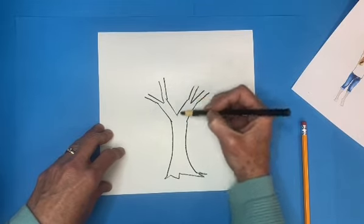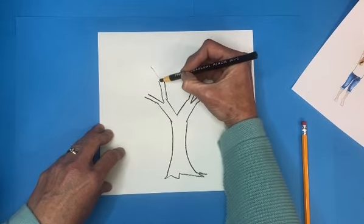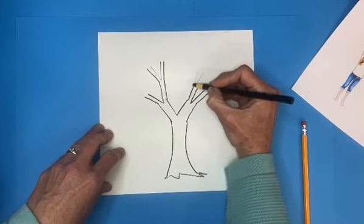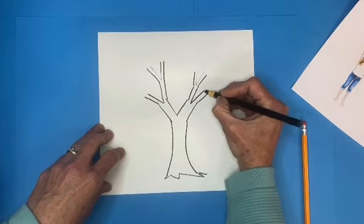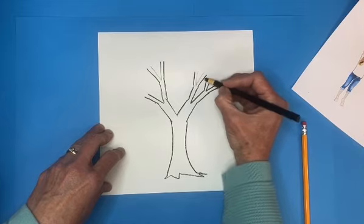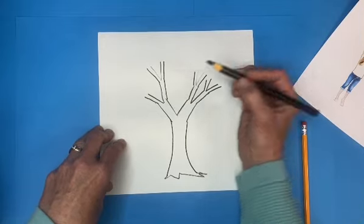So here I have another letter Y attached to that block letter Y, and then I'm going to make another letter Y, more letter Ys. Just keep adding, and if you run into another line, just stop and go bump behind it.